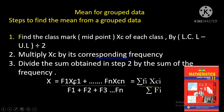Step 2: divide by the sum of the frequencies. The mean equals f1·xc1 plus f2·xc2 plus f3·xc3, divided by f1 plus f2 plus f3. In summation notation, mean equals the summation of fi·xci, divided by the summation of fi.